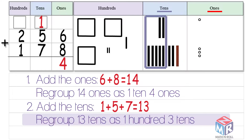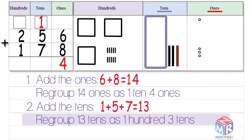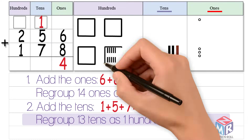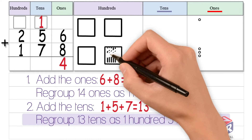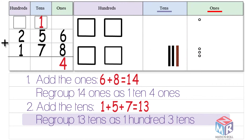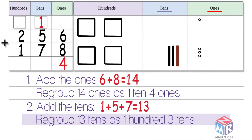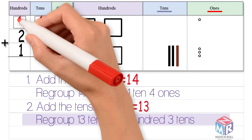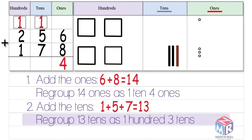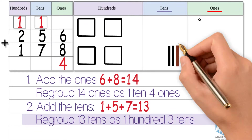You can see ten tens go into the hundreds column to make one hundred, represented as a square. Now we write this extra hundred at the top of the hundreds column. Now we're left with three tens.